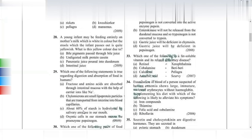Fat-soluble vitamins are A, D, E, and K. For correct matching of fat-soluble vitamin and deficiency: retinol is vitamin A and causes xerophthalmia — this is correct. Methylcobalamin (vitamin B12) is not fat-soluble. Calciferol (vitamin D) is fat-soluble but pellagra is caused by niacin (vitamin B3), not vitamin D. Ascorbic acid causing scurvy is correct, but vitamin C is water-soluble, not fat-soluble. The correct answer is option E — vitamin A, retinol, xerophthalmia.